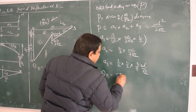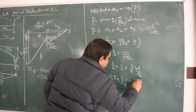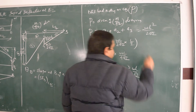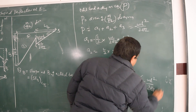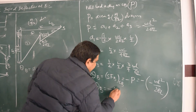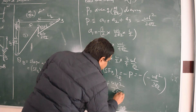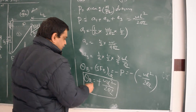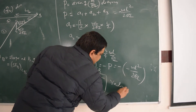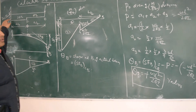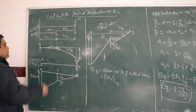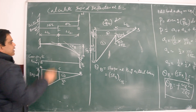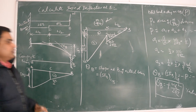The slope at B of the actual beam is the shear force at B of the conjugate beam, which equals −P. Since P is negative (load acting downward), the slope at B becomes positive: θ_B = WL²/(2EI), expressed in radians. Due to the fixed support at A, the tangent on the elastic curve at A is parallel to the beam axis, so the slope at A is zero.